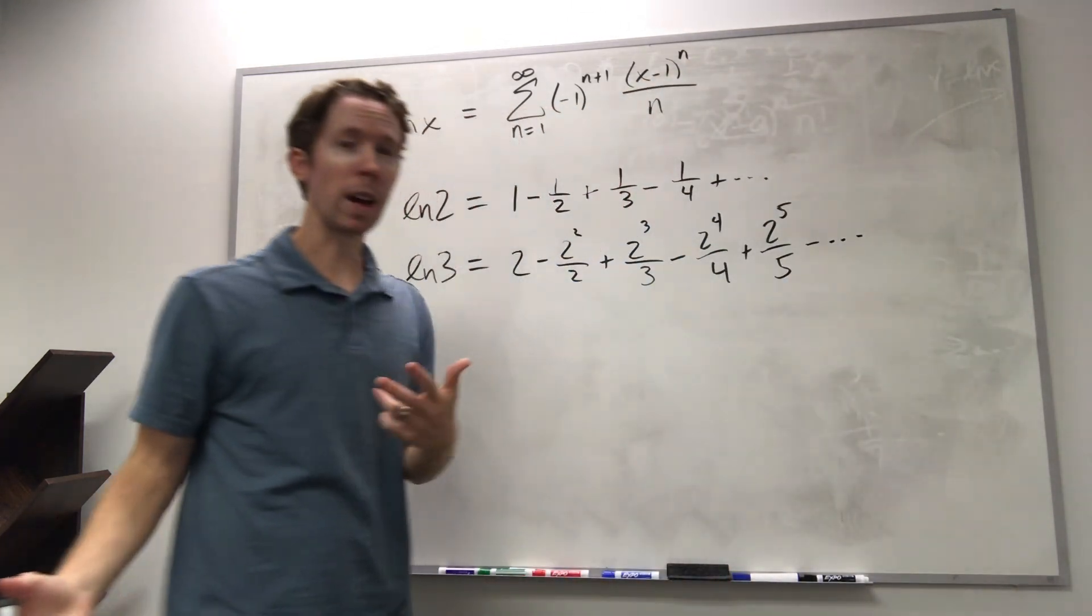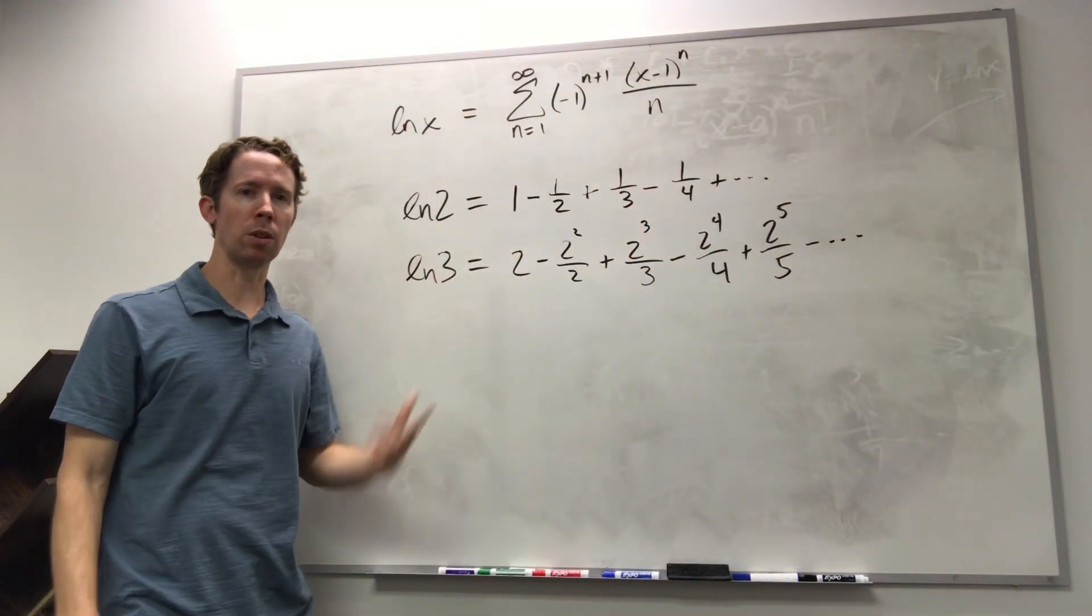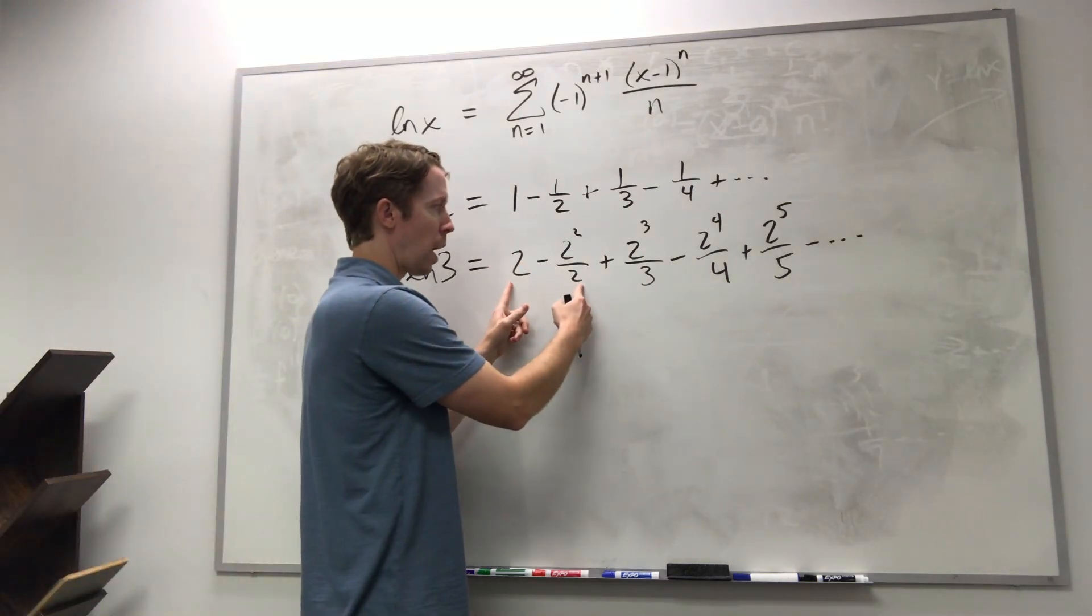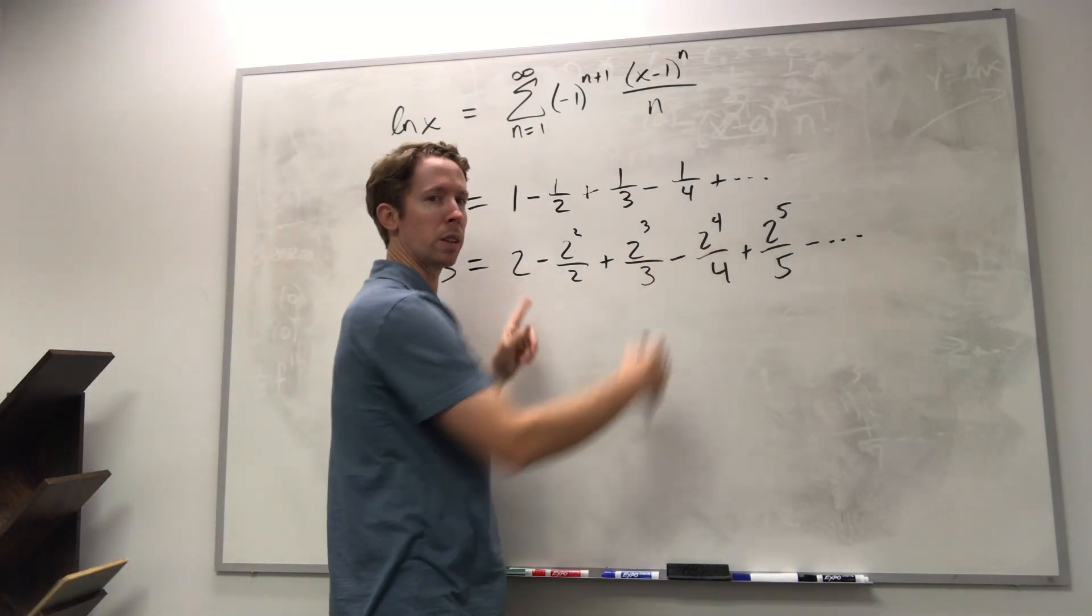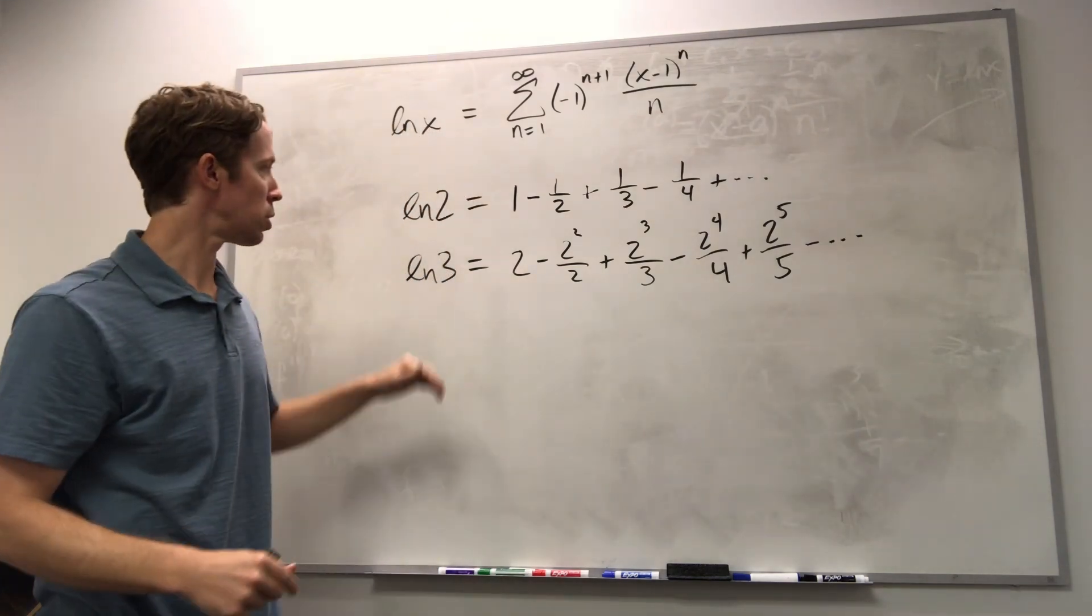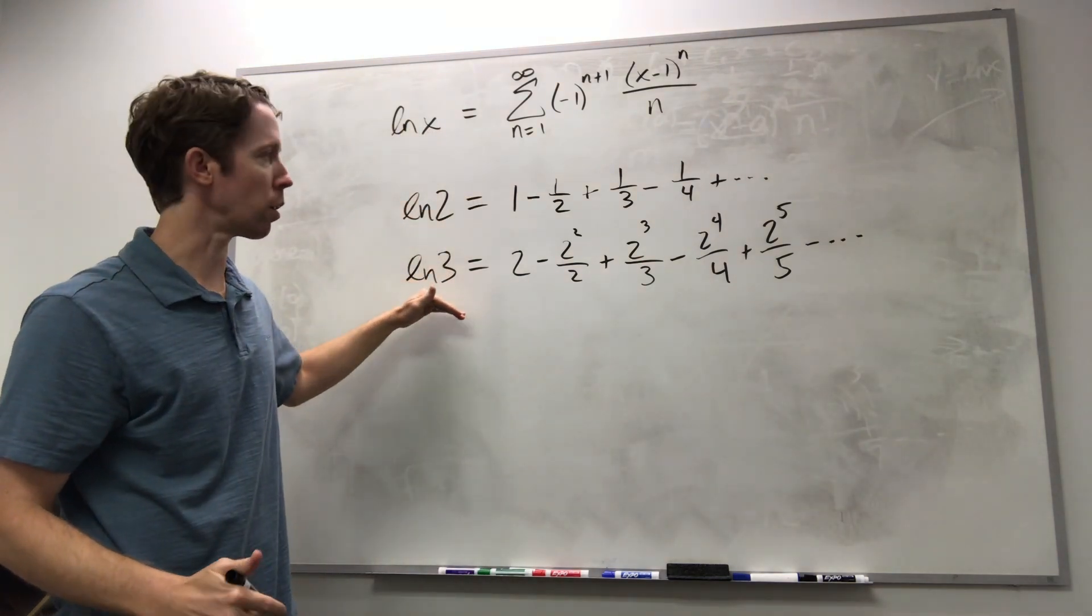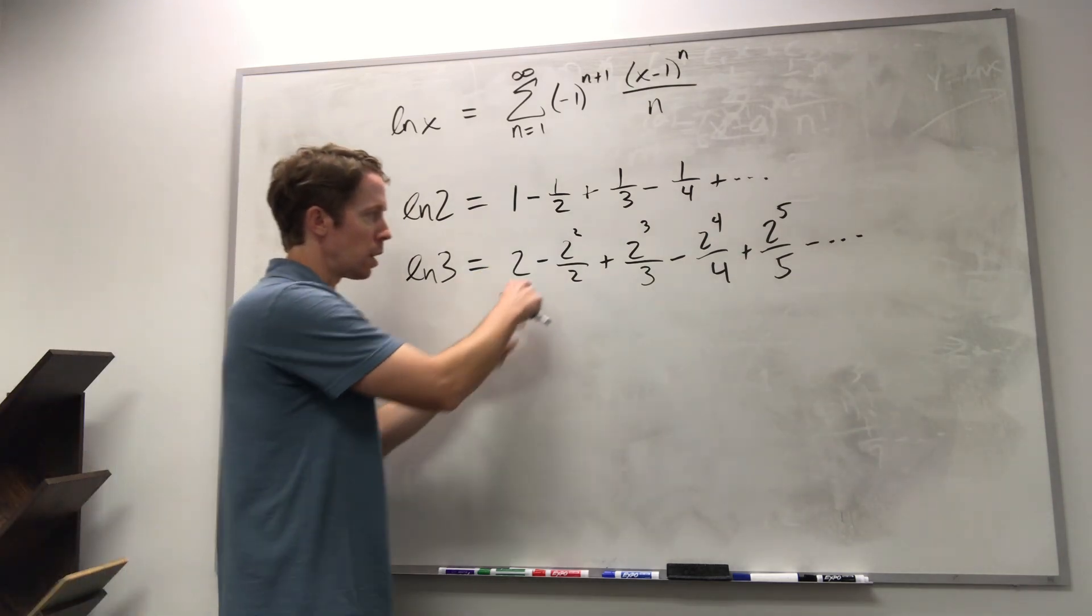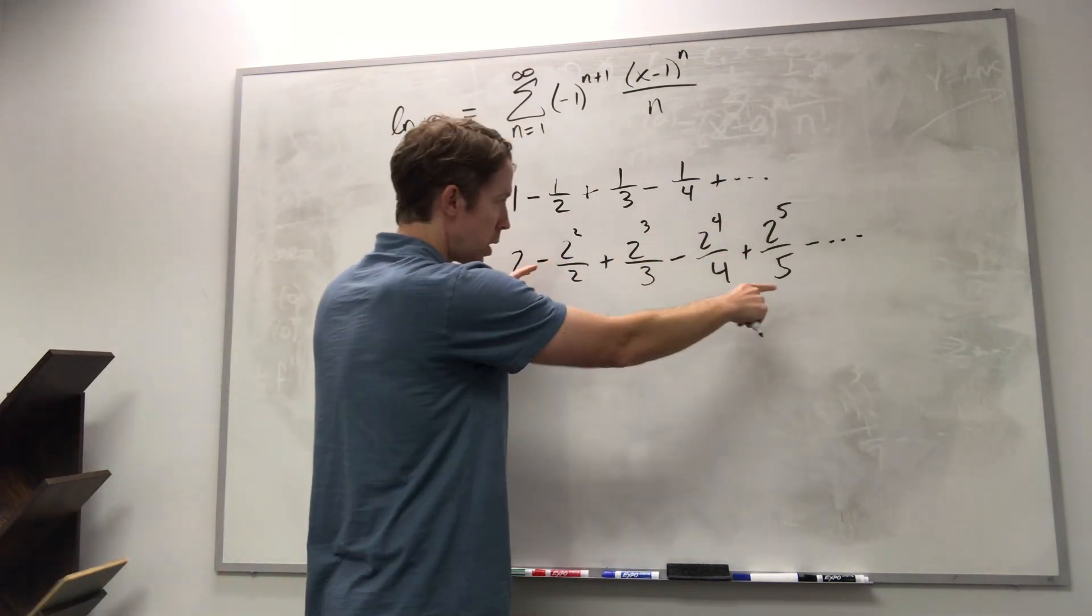So now we have to ask ourselves, is this going to converge to natural log of three, or is it not going to converge? And you could start adding this up piece by piece and see if those approximations are getting closer to natural log of three. But if we just look at this and think about it, I'm going to compare the numerators to the denominators.